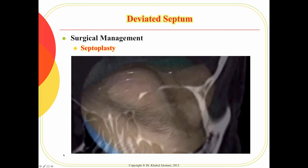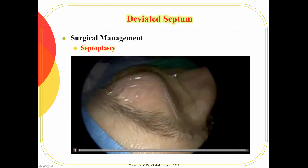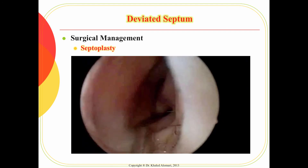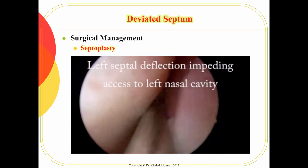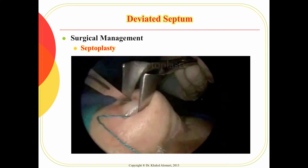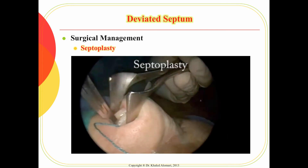Now let's watch a video of what happens during septoplasty, so you will be able to identify the patient's needs before and after surgery. This is a patient with severe septum deviation, and as you can see, the nasal cavity here is pretty narrow. The ENT surgeon will make a cut in the septum — this is called endoscopic septoplasty.